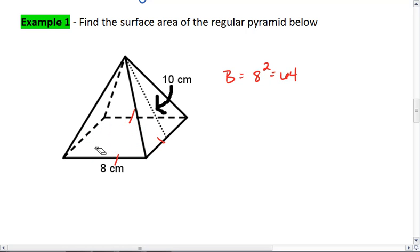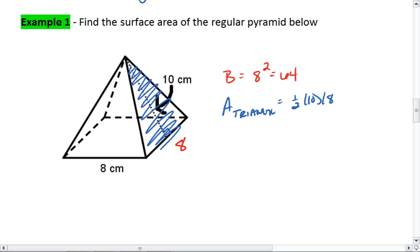Now I can find the area of our faces, our lateral faces, the triangles. You can do this two ways. You can use our formula, or you can just realize that the area of one triangle is 1/2 times 10 times 8, which is going to be 40.